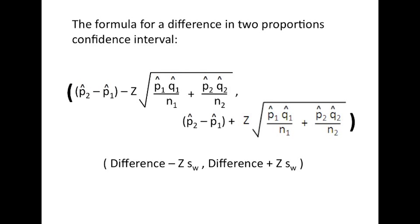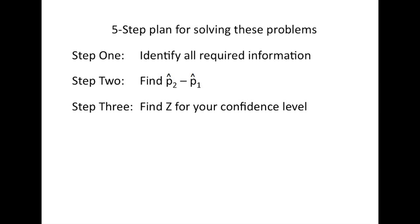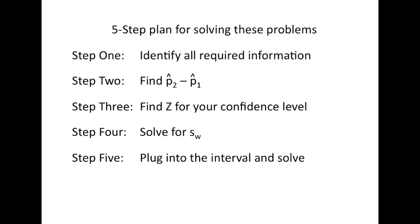In order to do this, we need a five step plan. First thing you do is identify all required information: P hat one, Q hat one, N one, P hat two, Q hat two, N two. We would determine our Z or T score and we're ready to roll. Then you find P hat two minus P hat one, that's the difference. Find Z for your confidence level, and that would be T if you have a small sample. Solve for the weighted standard deviation, plug those things into the interval and solve. It really doesn't sound too hard, does it?